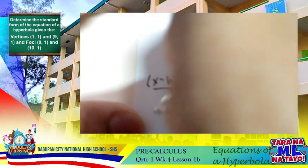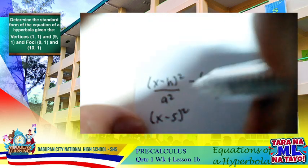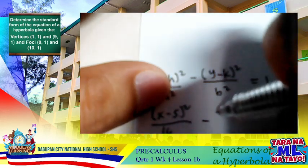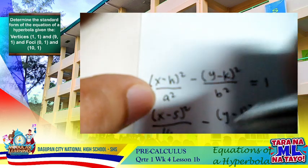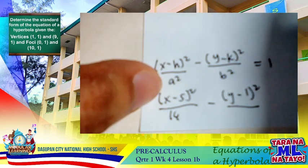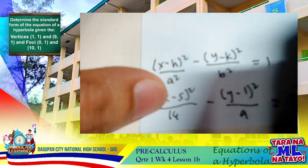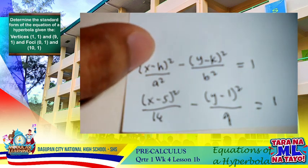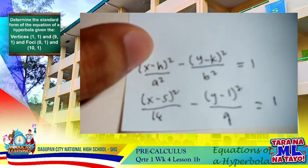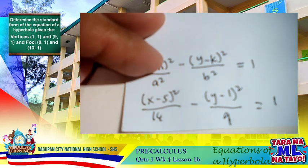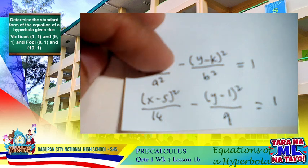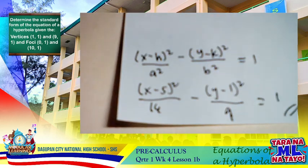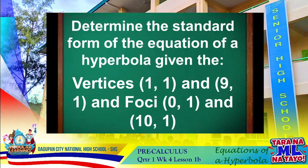Substituting our values with center (5, 1), a² = 16, and b² = 9, the equation becomes: (x − 5)² / 16 − (y − 1)² / 9 = 1. This is the standard form of the equation of the hyperbola with vertices (1, 1) and (9, 1) and foci (0, 1) and (10, 1). I hope you find this helpful in your lesson.